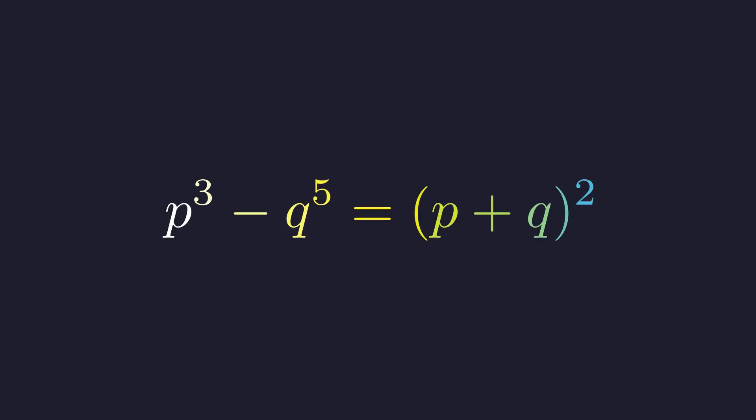We are looking for all pairs of prime numbers p and q that satisfy the equation p cubed minus q to the fifth equals the square of the quantity p plus q.